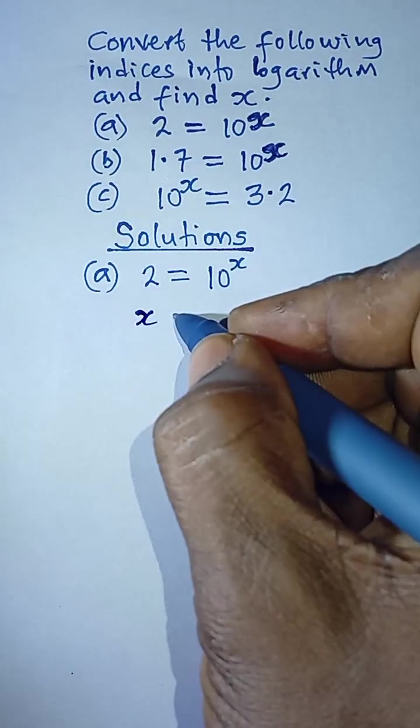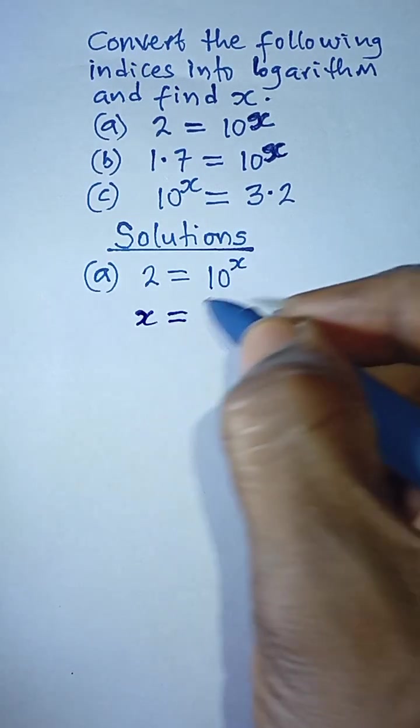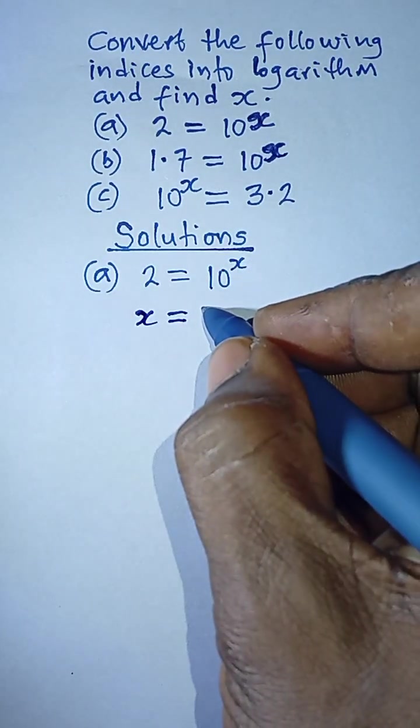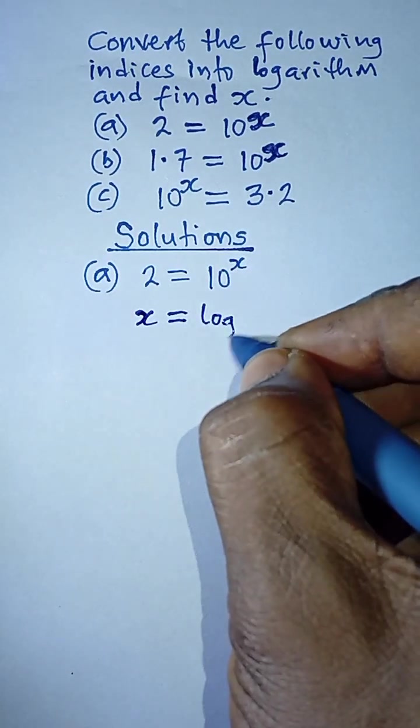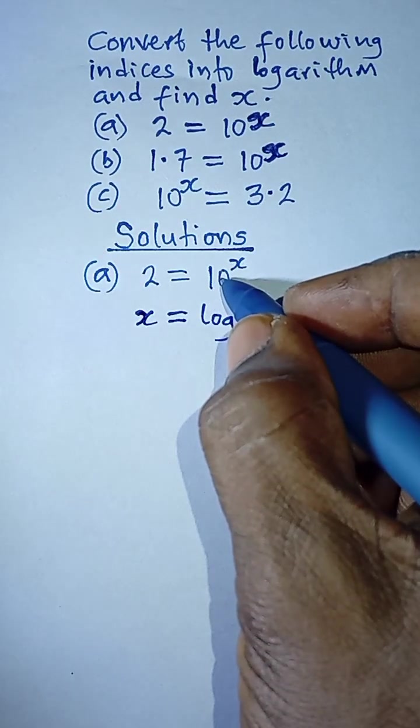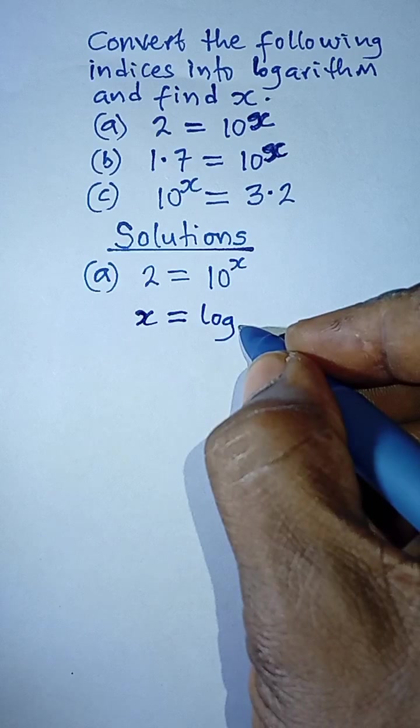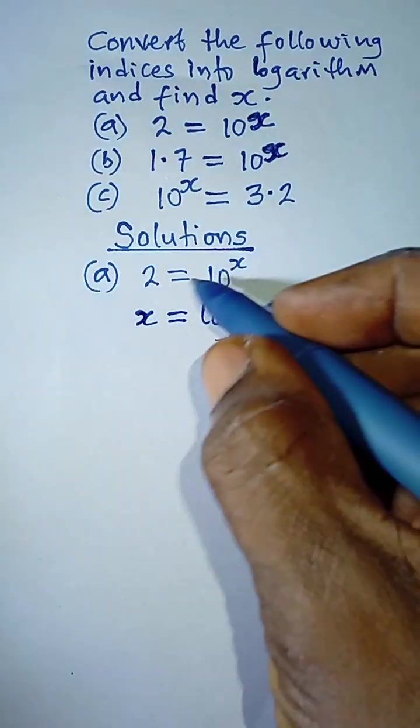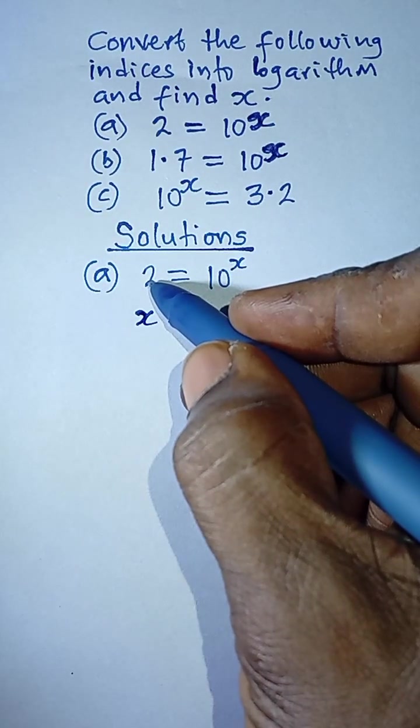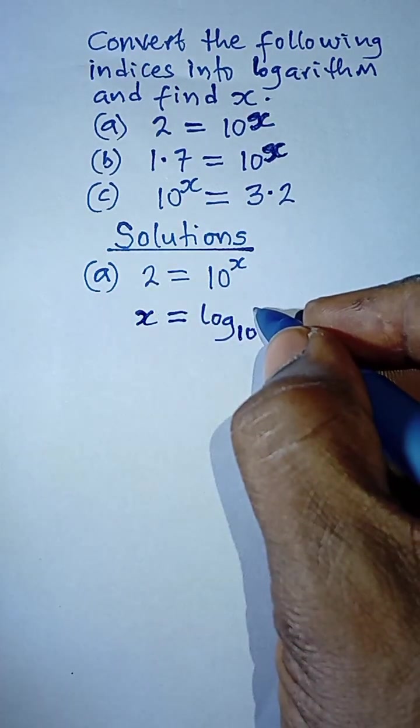You can see this is 10 raised to power x. The base here is 10, so the logarithm also takes that base 10, and then the logarithm of the number that is on this side, that is 2.